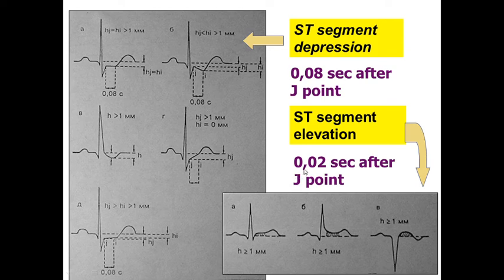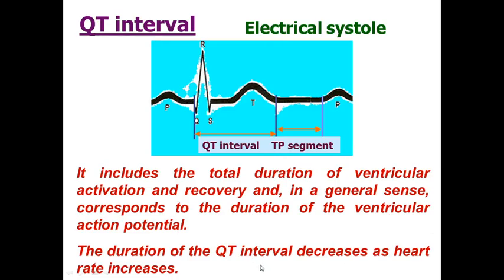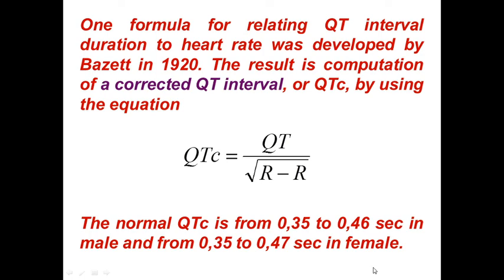It is very important to identify the J-point and also to detect segment depression or segment elevation. The QT interval includes the total duration of ventricular activation and recovery and corresponds to the duration of ventricular action potential. We call the QT interval the electrical systole of the heart. The duration of the QT interval decreases as heart rate increases. There is also a formula for calculating the corrected QT interval. The corrected QT interval in normal range should be 0.35 to 0.46 in males and 0.35 to 0.47 in females.